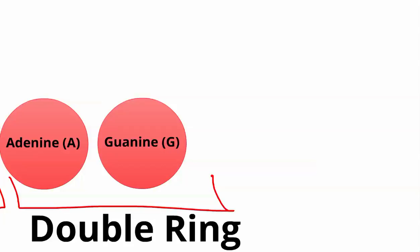Similarly, draw a line around adenine and guanine and write double ring to remind us that these are the double-ring bases. The next thing we're going to go over is the thinking map for thinking about DNA on the back side of your worksheet. The directions say to draw the thinking map from the video on your paper so that you can study from it for the benchmark.